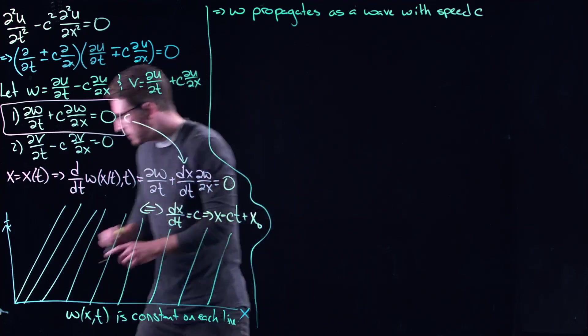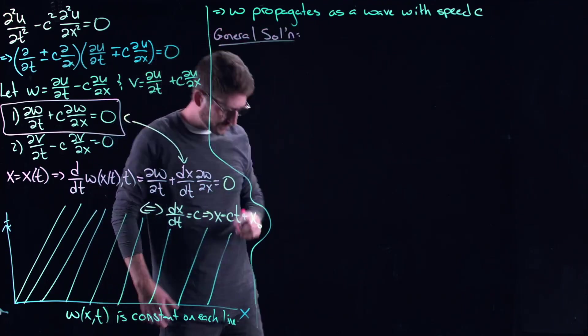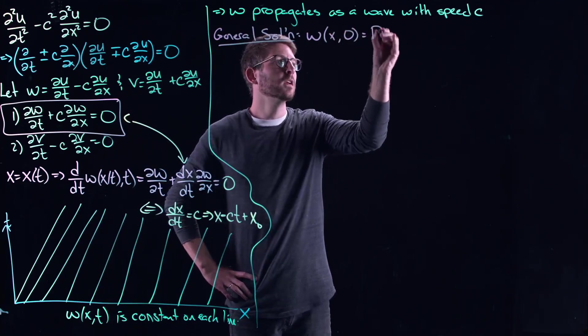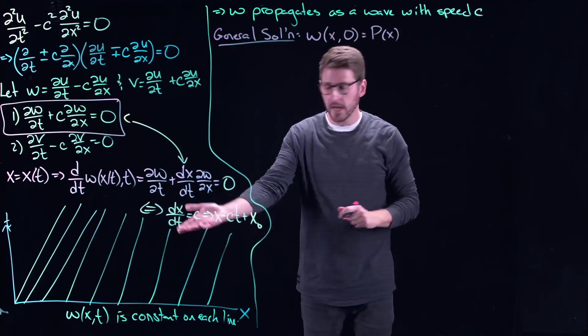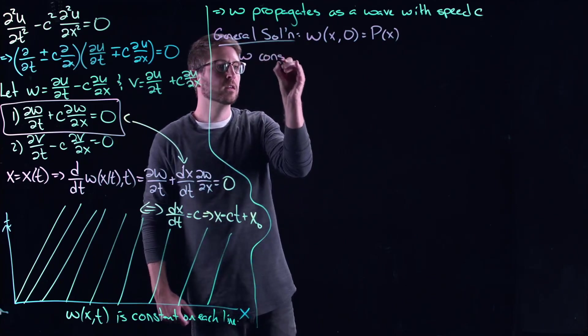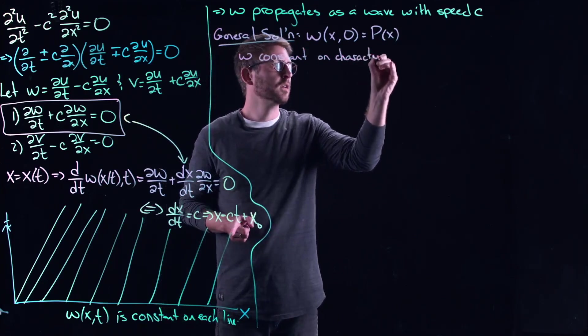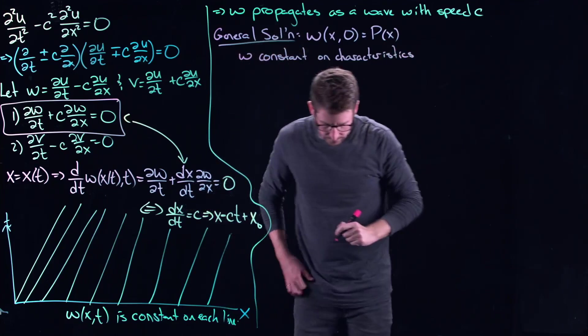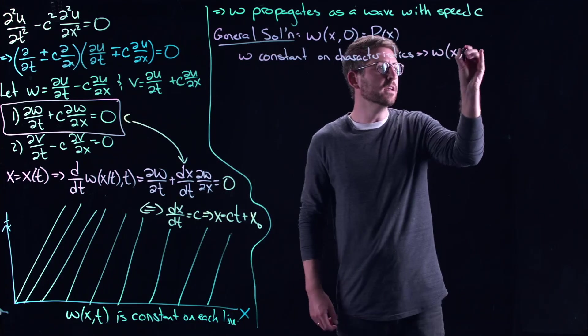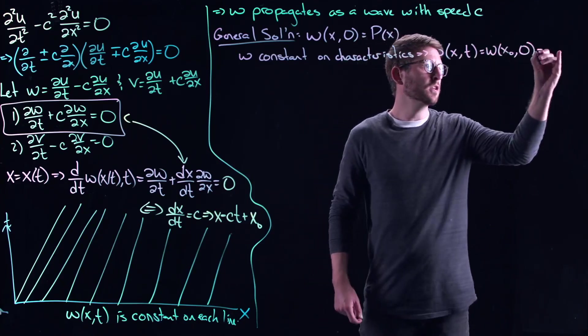So the question is, what's the general solution here? Well, and maybe this will make things a little bit more clear. But if we have an initial condition, let's imagine I've got some original function p of x that was my initial condition. x is unbounded in this case, so x belongs to R. Well, since w is constant on characteristics, which is just this line, this would tell me that w of x, t equals w of x0, 0, wherever I started at time zero, which is just p of x0.